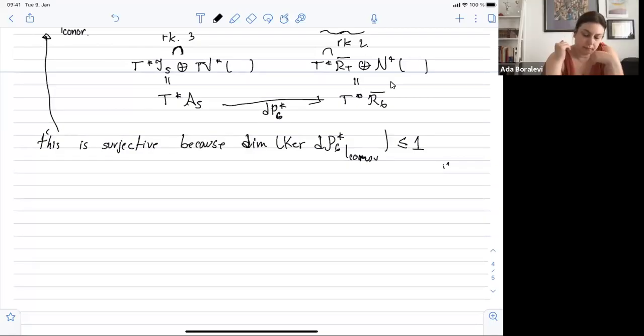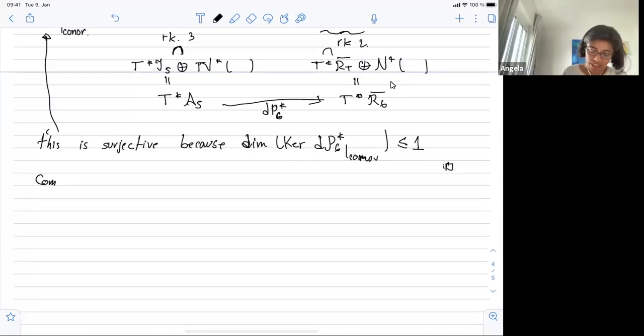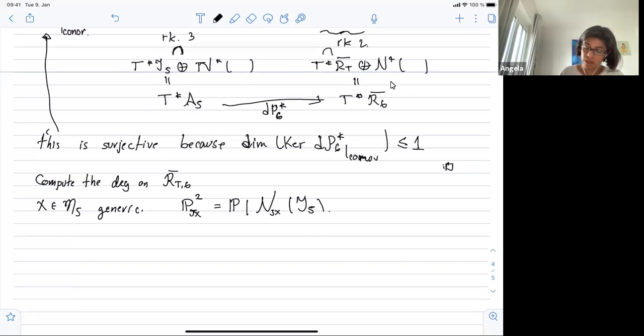Okay, let's compute the grid from RT. So take X in M5, generic. And then over this, I am identifying X with Jacobian. Let's put maybe the Jacobian of X. This is the P2 over GX in the exceptional divisor. This is the projectivization of the normal of M5 over A5, the projectivization of that fiber.